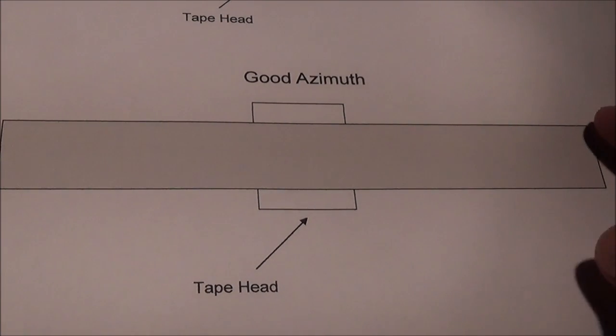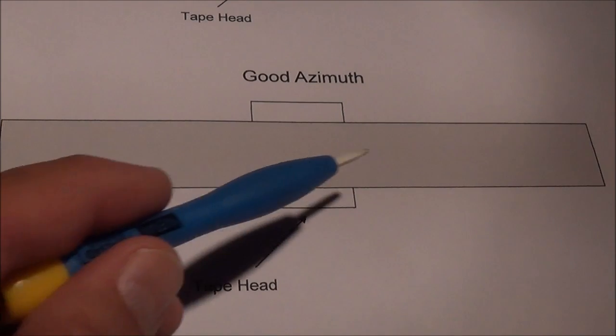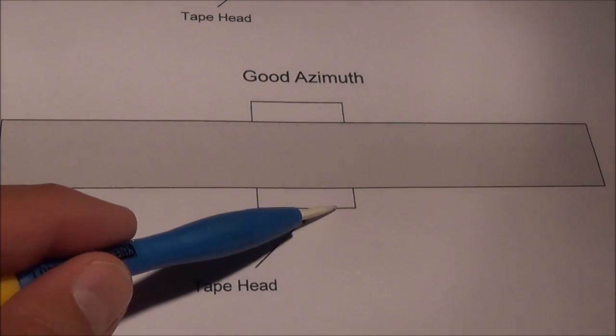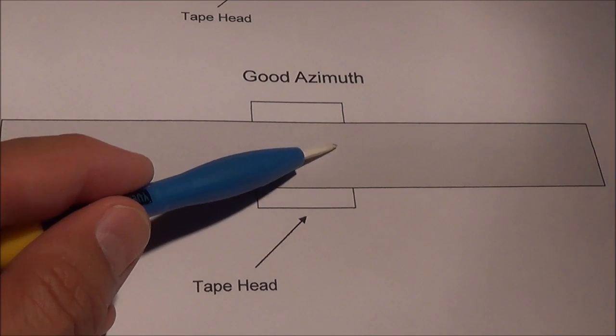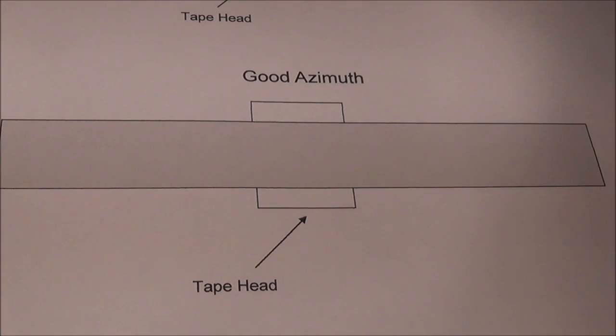When I say the tape head should be horizontal with the tape path, you see here the head is not tilted in any way to the side. So that's an example of good azimuth.